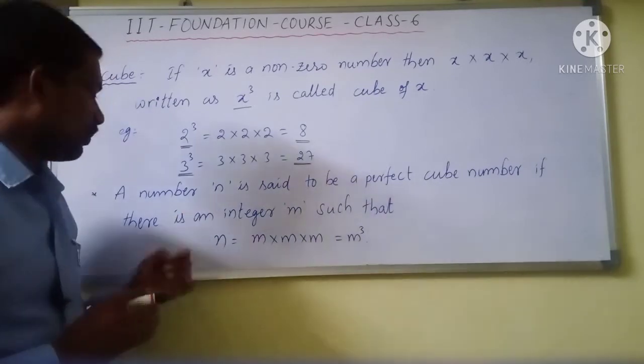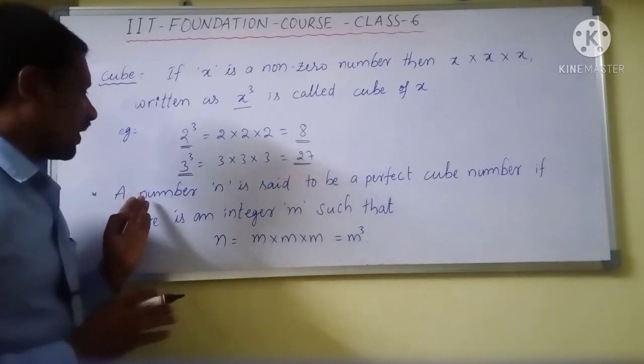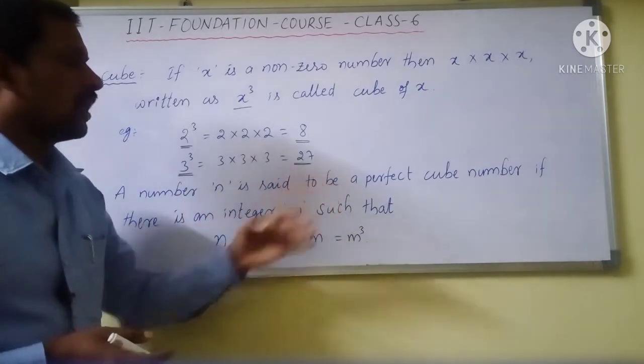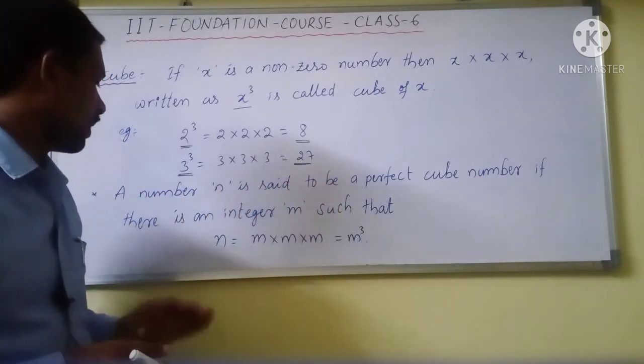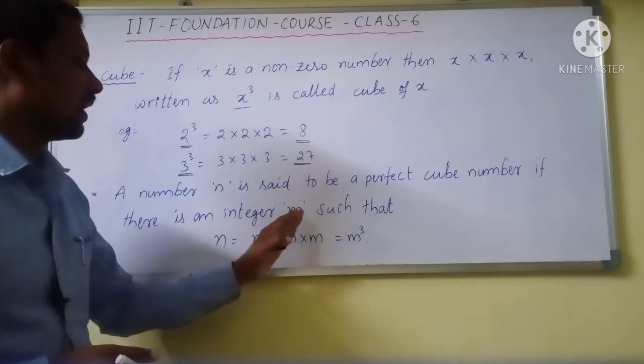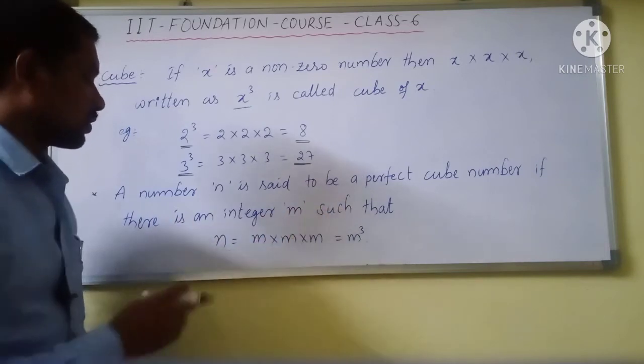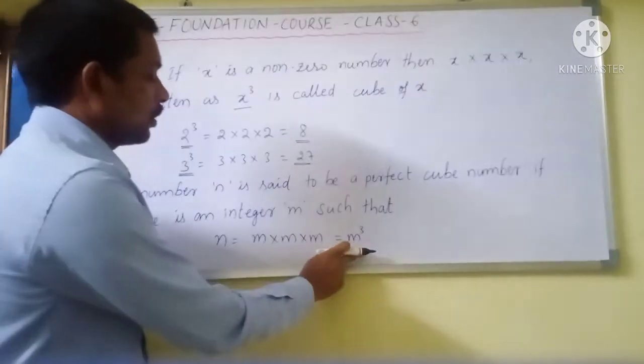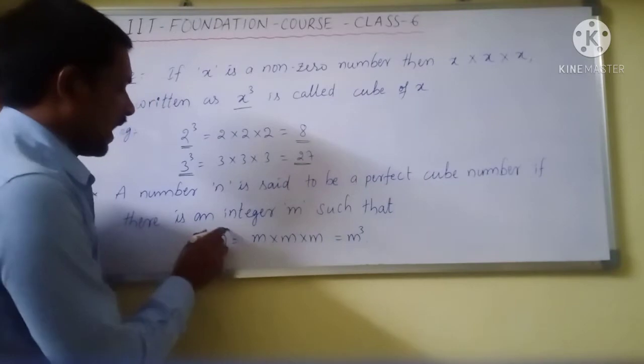Then what do you mean by perfect cube? A number n is said to be a perfect cube number if there is an integer m such that n is equal to m into m into m, that is equal to m cube.